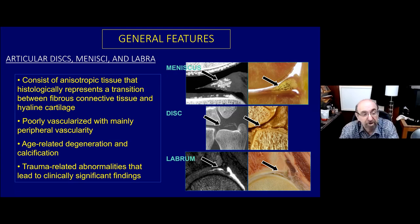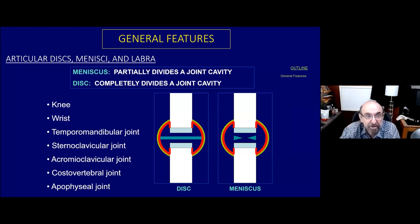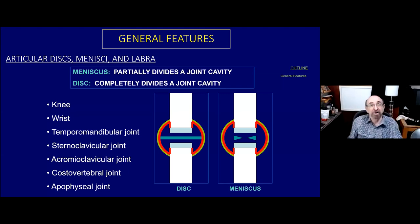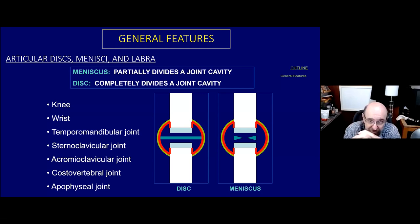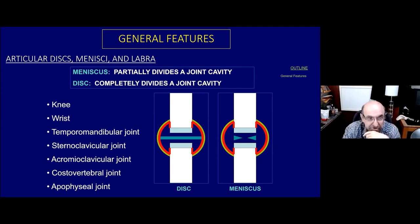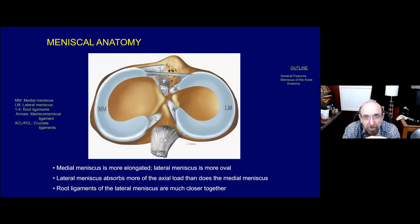Trauma-related abnormalities can lead to clinically significant findings. If you go to an anatomy book to define the difference between a meniscus and disc, a meniscus partially divides a joint cavity and a disc completely divides a joint cavity. The problem with that definition is with aging - a disc may develop a full thickness perforation, and then it becomes a partial division of the joint cavity. So there's a little bit of confusion with regard to the terminology.